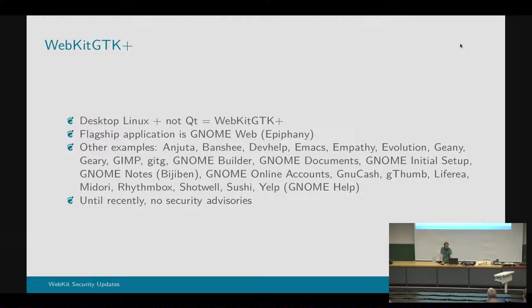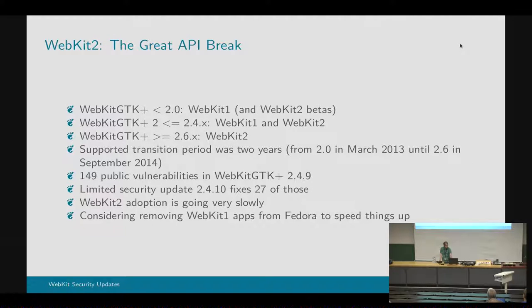But we've recently started doing security advisories on a regular basis. We release them to distributions, we package WebKit, and we release on OSS security mailing lists. So distributions are getting the CVEs they need in order to get updates out to users. Most of this presentation I'm going to talk about how well that's been working. But there's one more big snag we have to talk about first, which is WebKit 2.